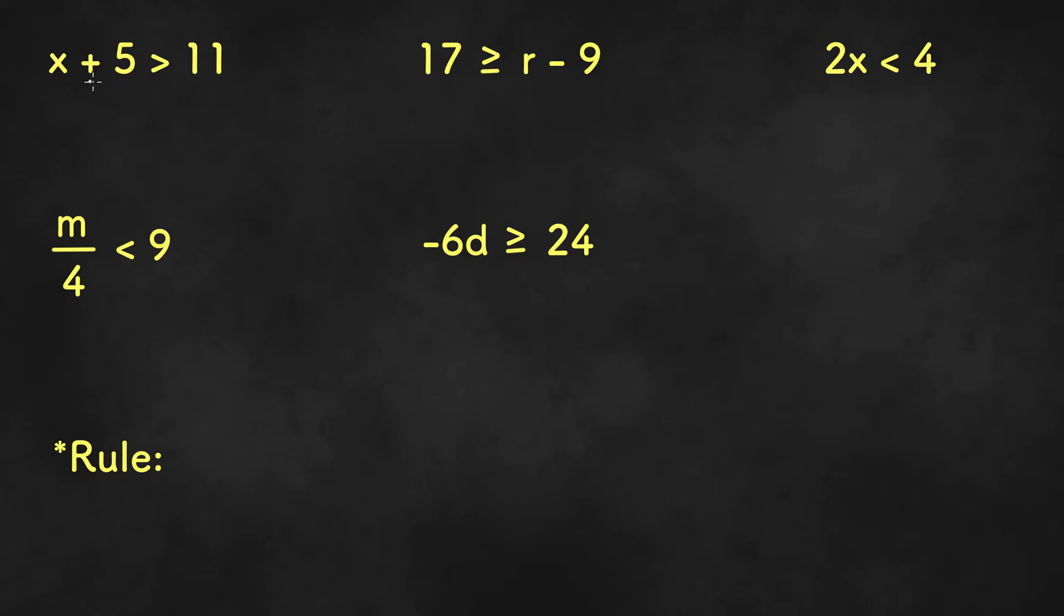The first one says x plus 5 is greater than 11. All we need to do is treat this greater than symbol as an equal sign. We can subtract both sides by 5 to get x, and then bring down the symbol, is greater than 11 minus 5 or 6. And that would be your answer.